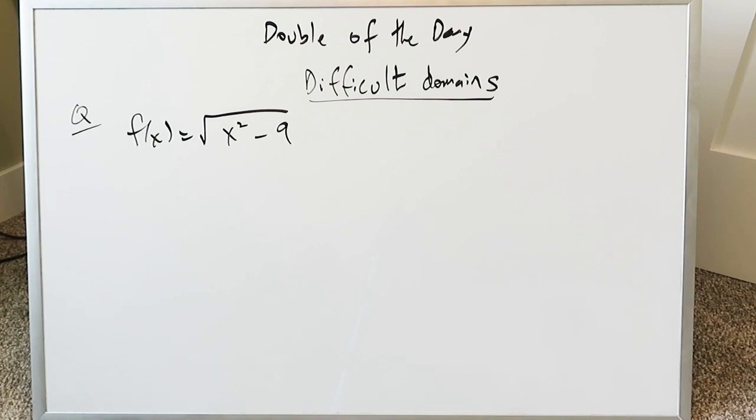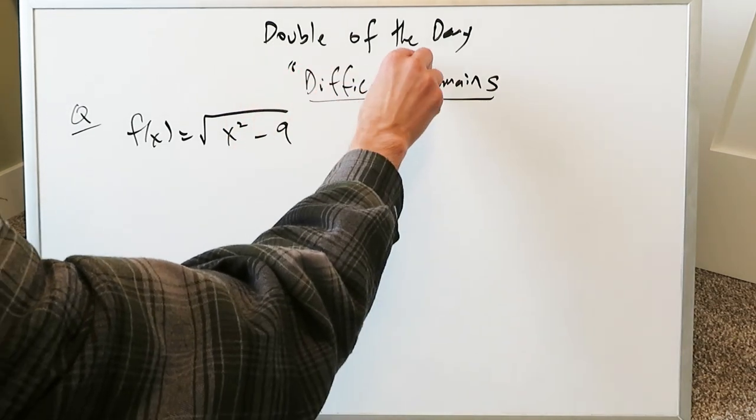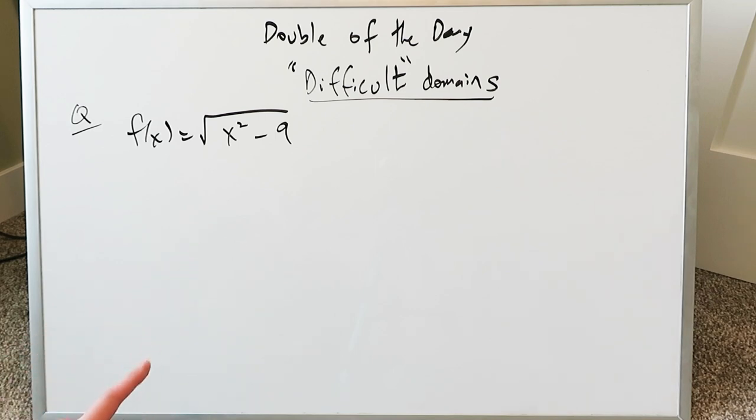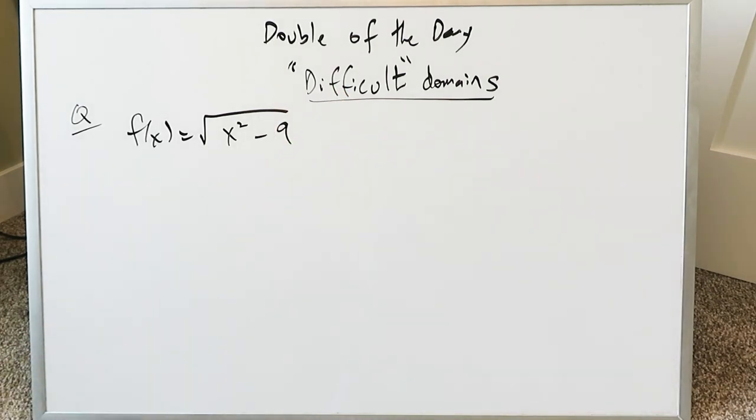Good afternoon, I am Mr. Ish. Thank you for joining me for this video on difficult domains. Difficult over here is a matter of perspective and a subjective term. It could be difficult for some, easy for some, or moderate in terms of difficulty for many.